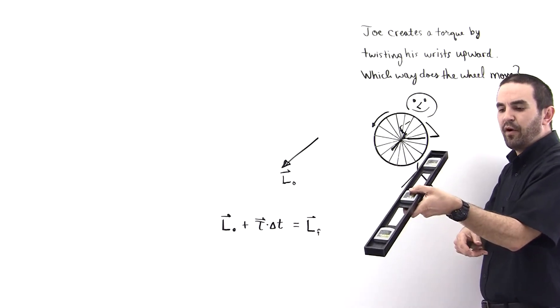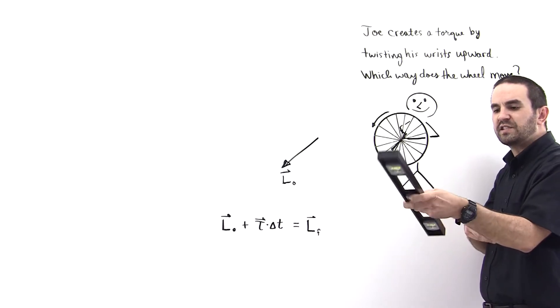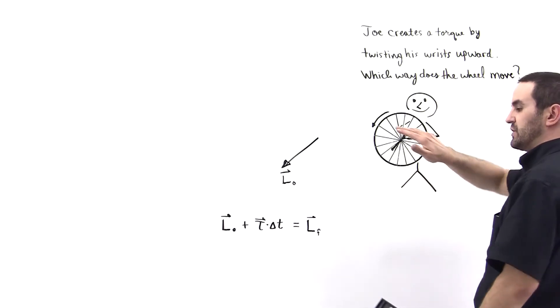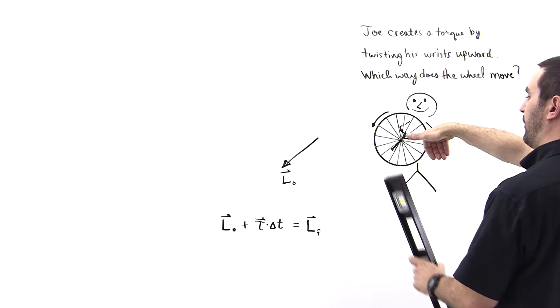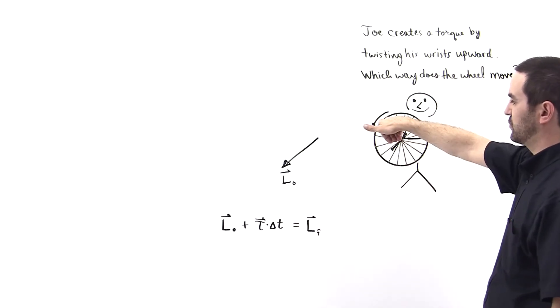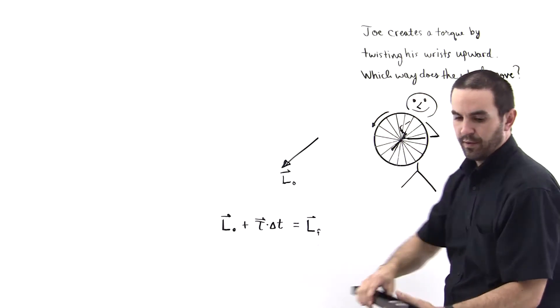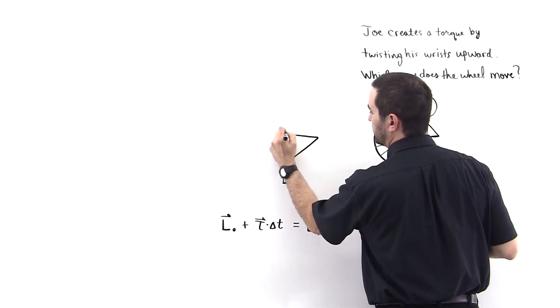Well, notice that the bar—or on your exam you'll have a pencil—the bar goes this way. So the direction of rotation of the bar: you just take your fingers and curl them in the direction of rotation of the bar, and your thumb points in the direction of this torque impulse, which is to Joe's right. It's that direction. Okay, and so this is the direction of the torque impulse like so.